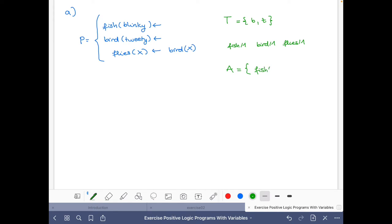So we can write here all the atoms that can be built with these pieces. So we have fish(blinky), fish(tweety), and now with bird, we get bird(blinky) and bird(tweety). And similarly with flies. As you see, this is pretty straightforward.